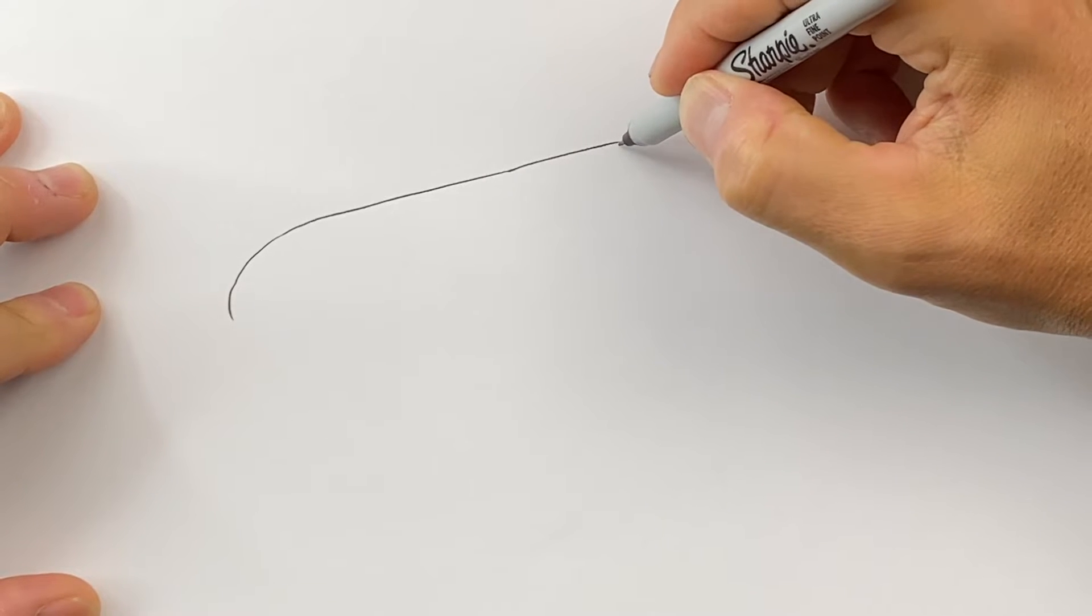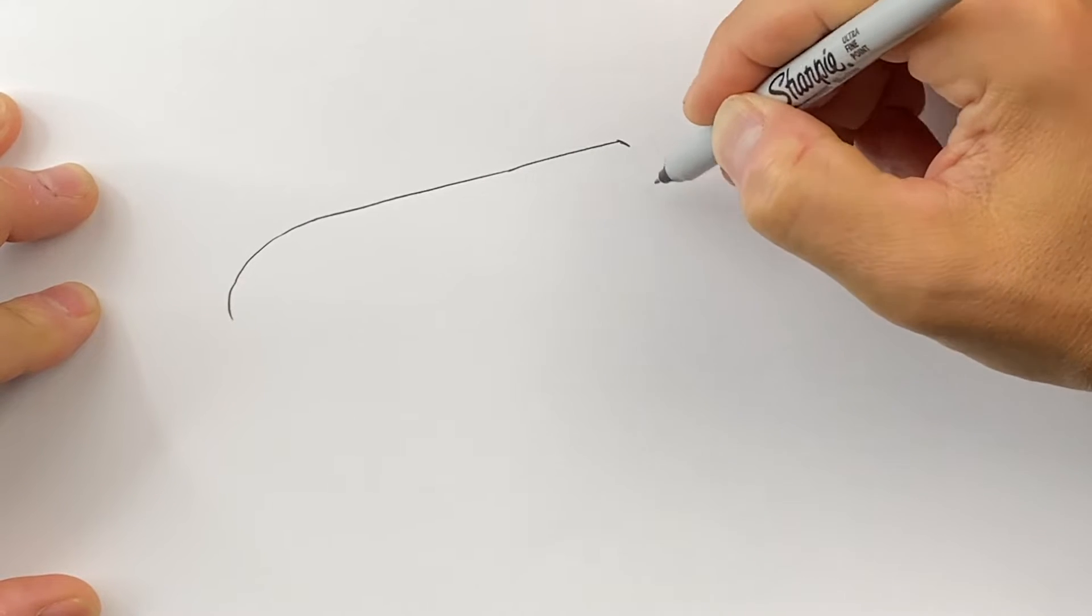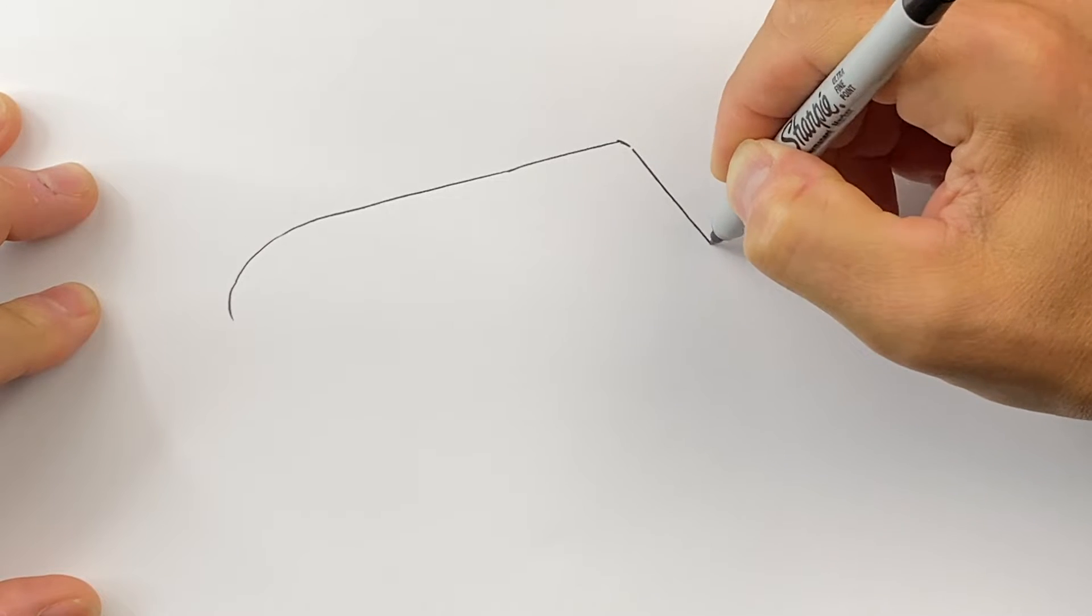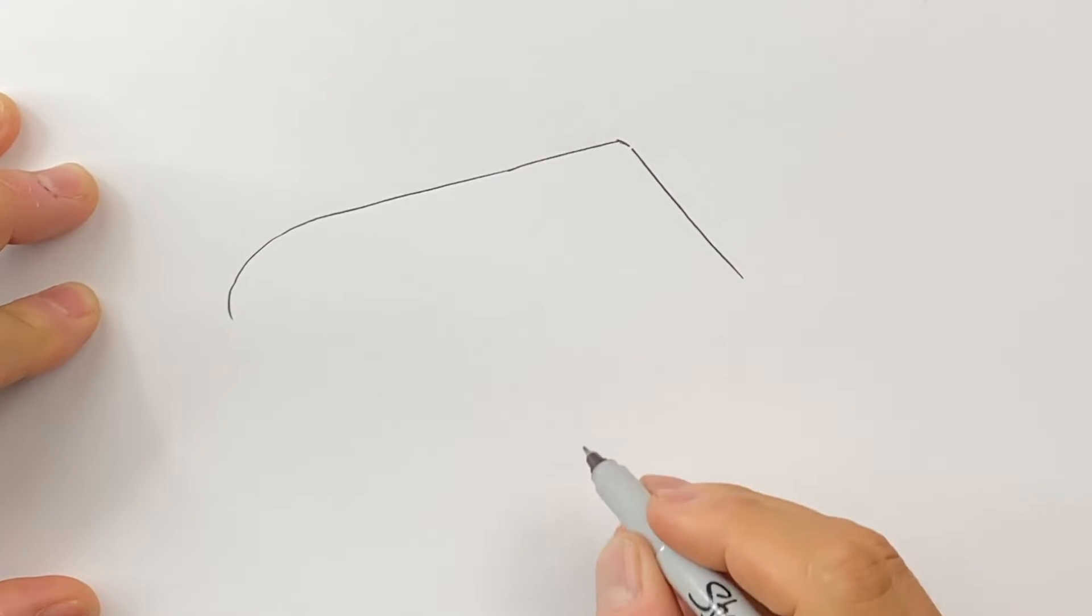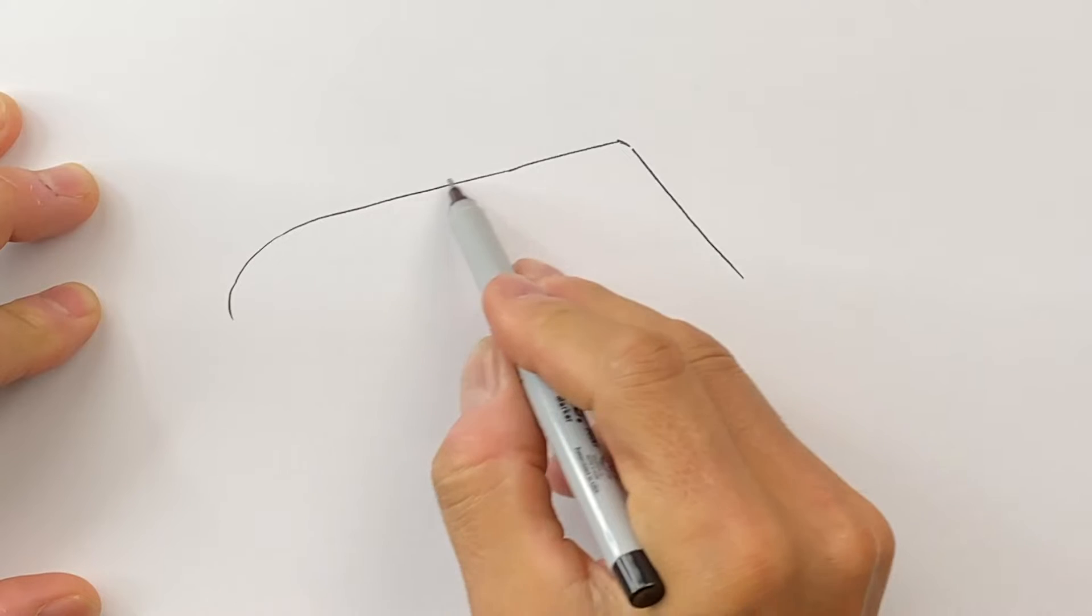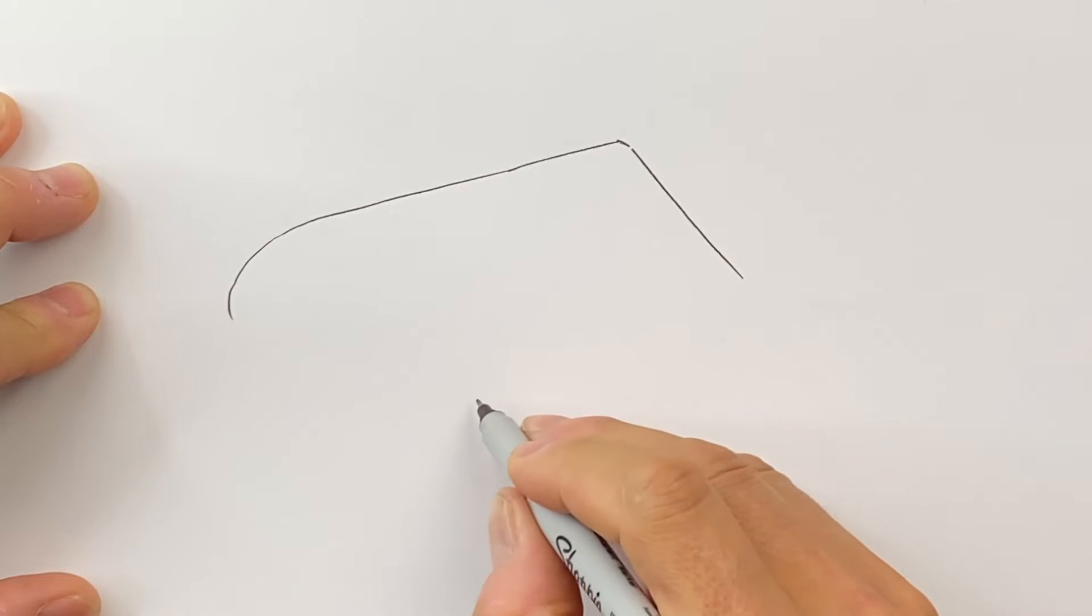Then I'm going to draw the base of my popsicle, and this will be coming at an angle down to the right of my page. Then this line here, we'll want to draw the same line right about here in the same direction.